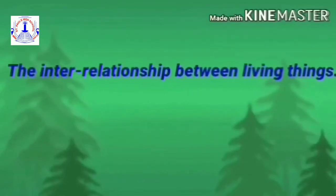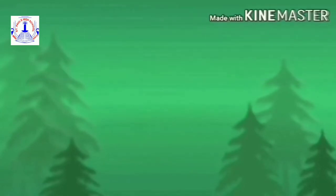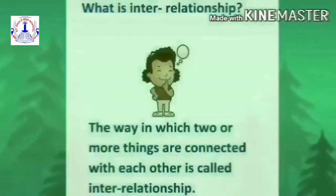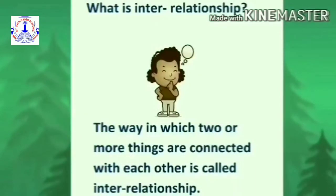Now let's begin with our new topic, the interrelationship between living things. What is interrelationship? The way in which two or more things are connected with each other is called interrelationship. For example, man depends on trees or plants for fruits, foods and vegetables, medicines, wood, etc. This is how we come to know about the connection, or interrelationship, of human beings with trees and plants.